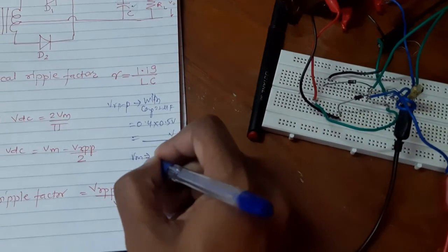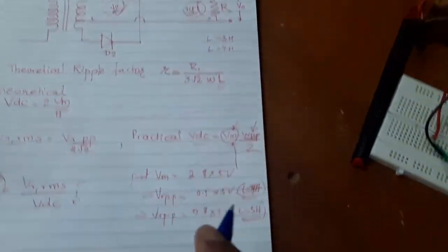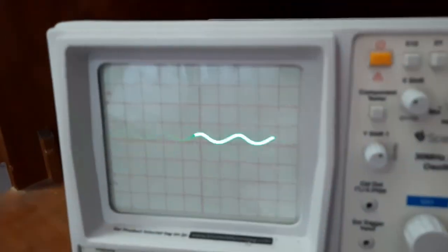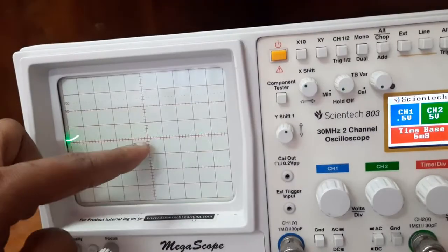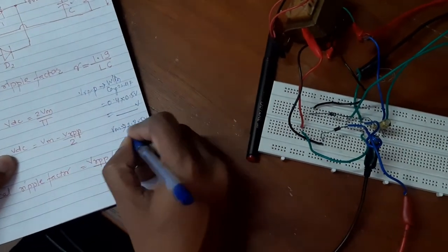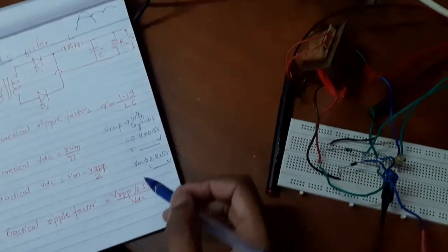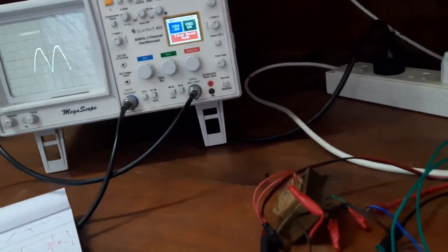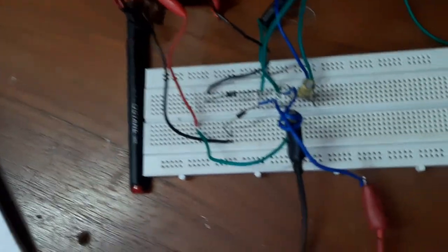For Vm, it is 2.8 divisions into 5 volts per division. Substitute these values into the formulas to get Vdc and finally calculate the ripple factor. What we learned in this experiment is that after connecting the capacitor to the inductor filter, it has significantly reduced the ripple. Thank you.